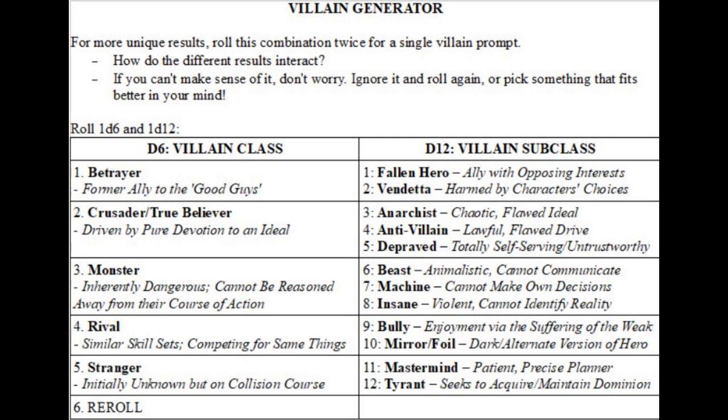Your D6 gives you your overall class — if you roll a six, just reroll. You'll get Betrayer, Crusader, Monster, Rival, or Stranger. Your D12 gives you a subclass: Fallen Hero, Vendetta, Anarchist, Anti-Villain, Depraved, Beast, Machine, Insane, Bully, Mirror or Foil, Mastermind, or Tyrant. As you roll, you can get some pretty interesting situations. You start with just one D6 and one D12 roll, and that might be all you need — maybe you get a Rival and a Vendetta, which is an interesting mix.